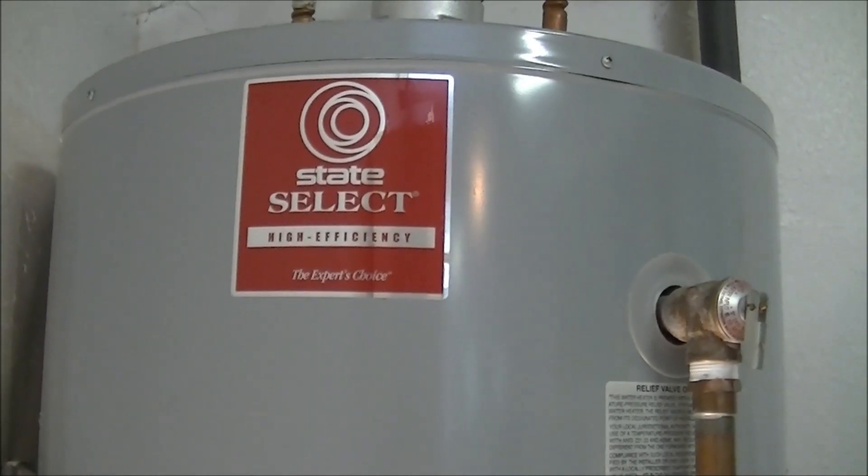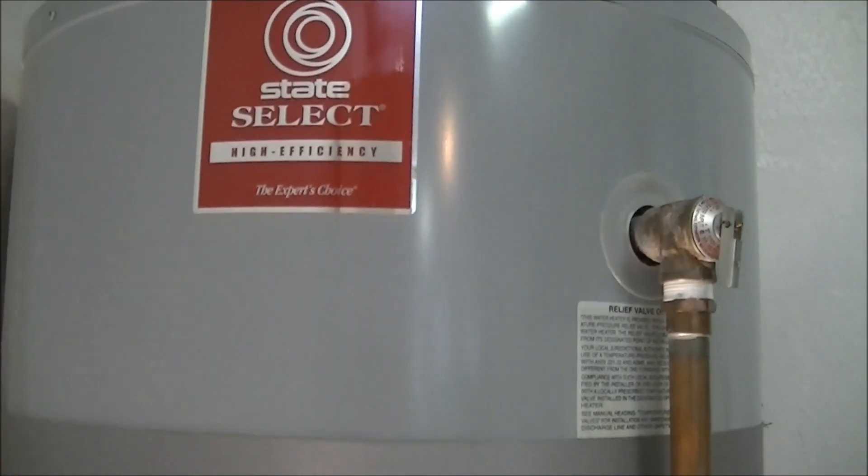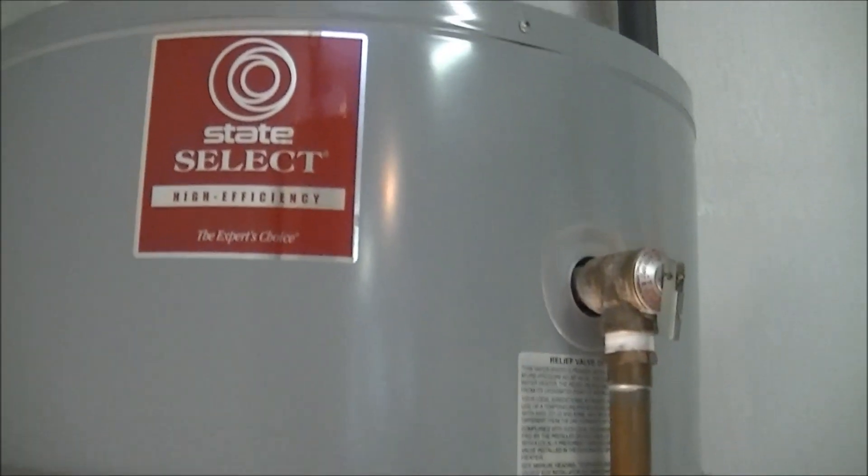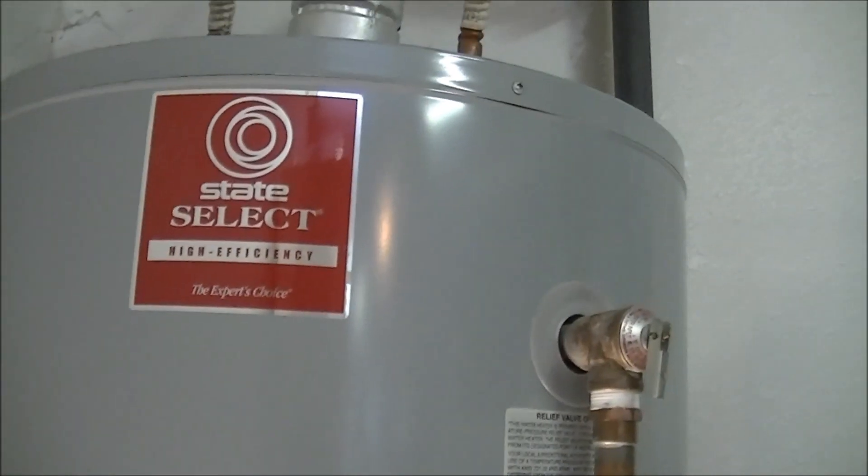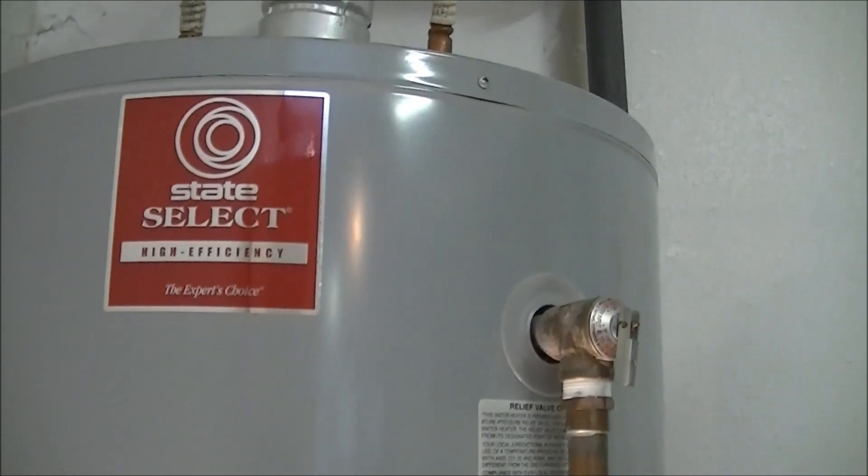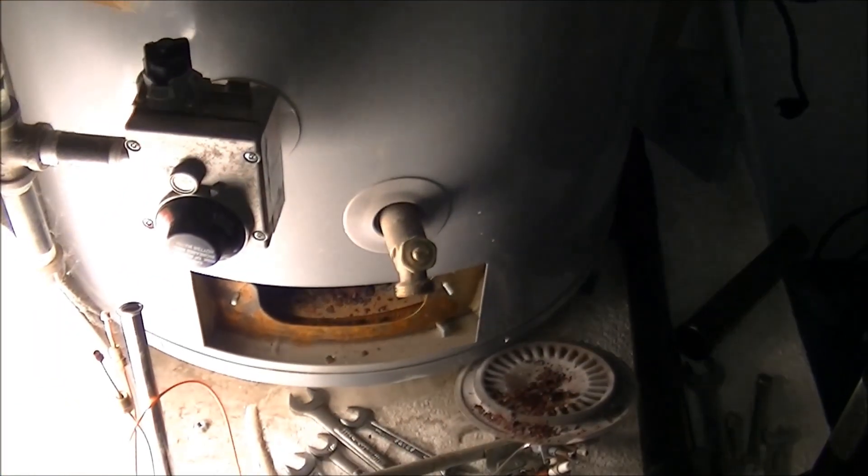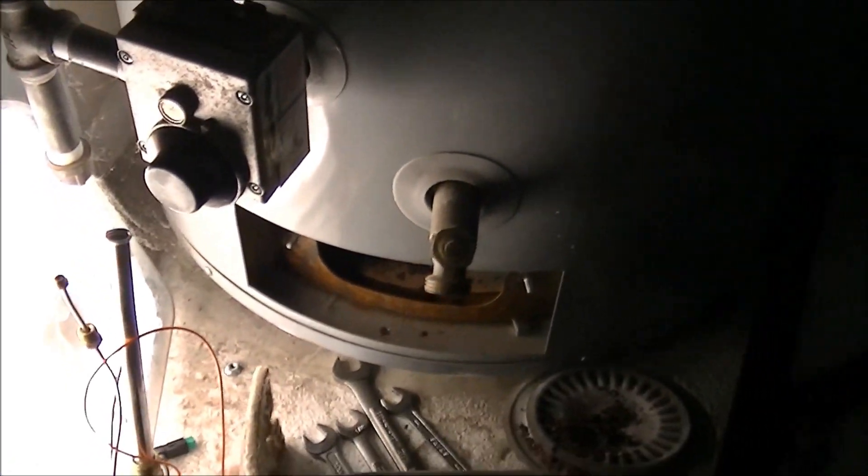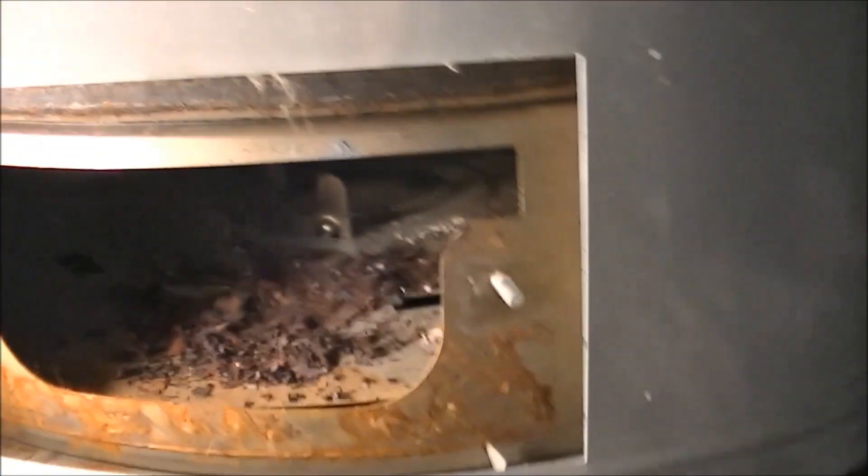I have a 50 gallon gas water heater, a Select State high efficiency model, and it will stay lit for a few minutes and then the burner will go off. I read on the internet you can clean some parts on the burner, and I want to show you what it looks like.